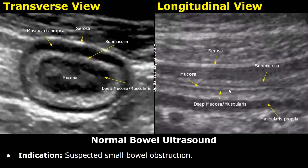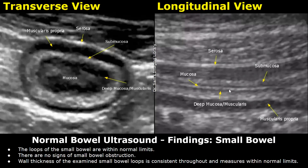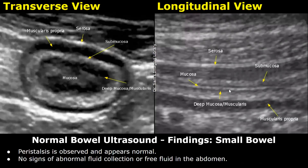We start with our normal report. The indication is suspected small bowel obstruction. Findings: the loops of the small bowel are within normal limits. There are no signs of small bowel obstruction. Wall thickness of the examined small bowel loops is consistent throughout and measures within normal limits. Peristalsis is observed and appears normal.